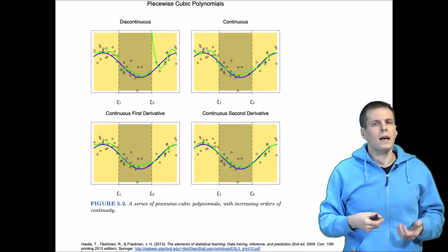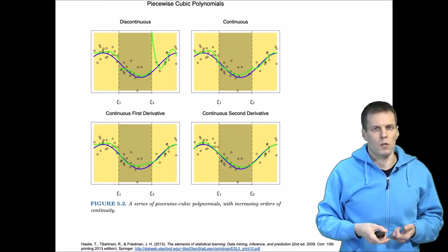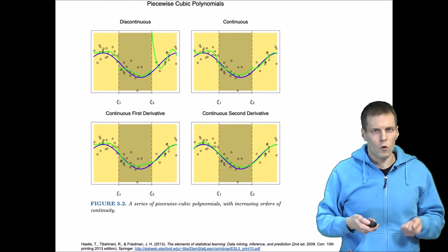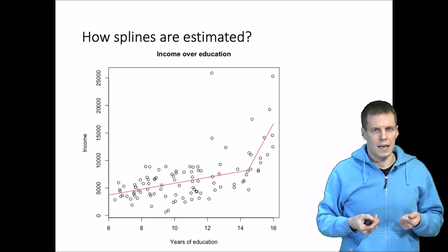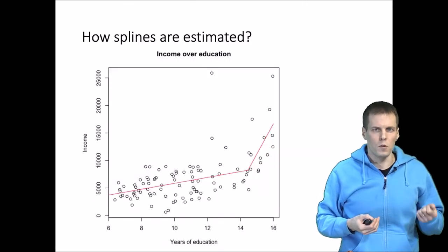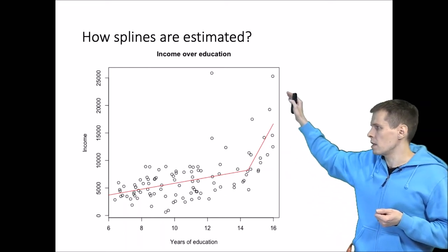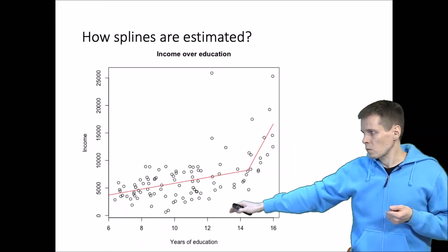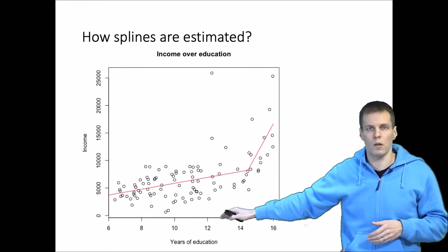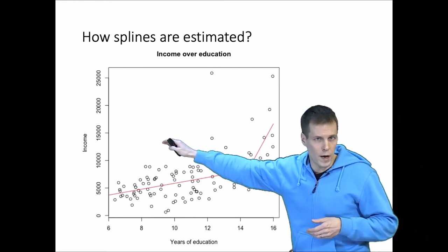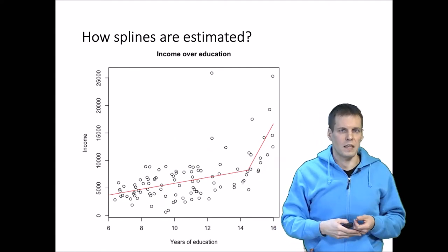So how exactly do we calculate these plots? Let's take a look at how splines work using the Prestige dataset. So this is a dataset that I use in several examples. We have occupations here as the observations. We have the average years of education of the occupation and then income of that occupation in Canadian dollars in the 1970s.